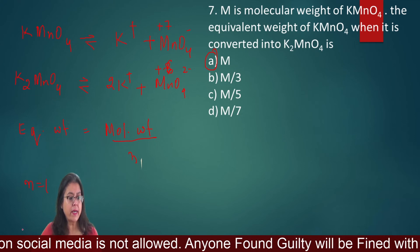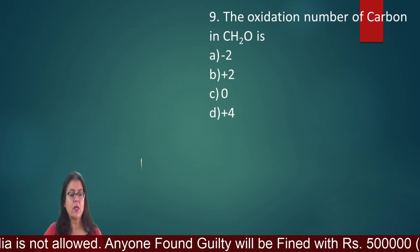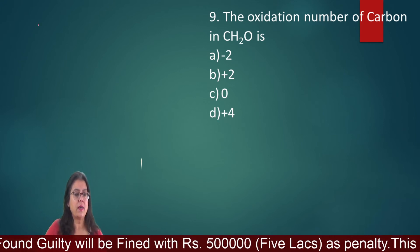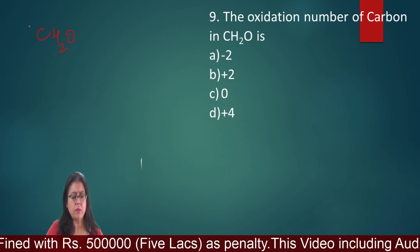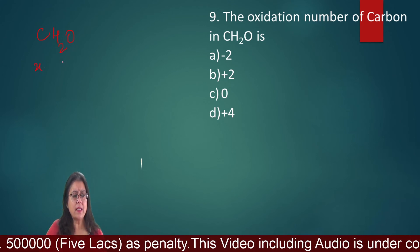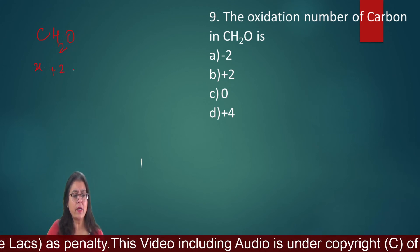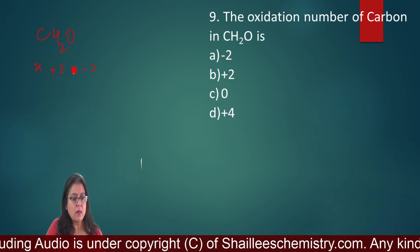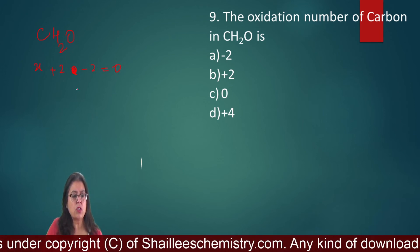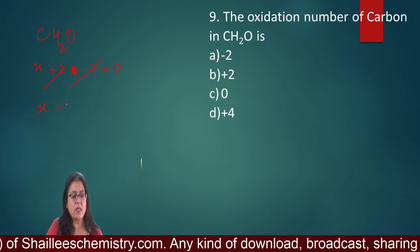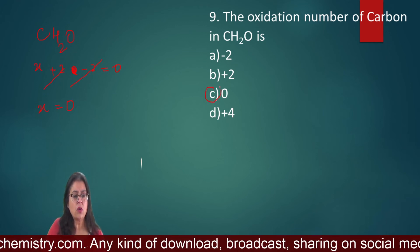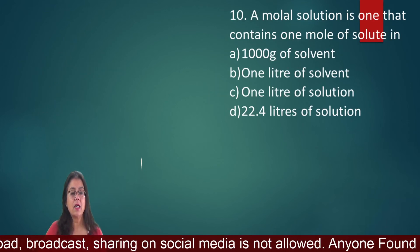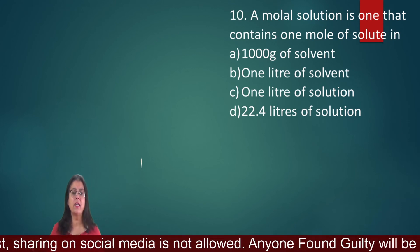Question number 8: Oxidation number of carbon in CH₂O. Let carbon's oxidation state be X. In CH₂O: X + 2(+1) + (-2) = 0, so X + 2 - 2 = 0, giving X = 0. The oxidation state of carbon in CH₂O is 0.